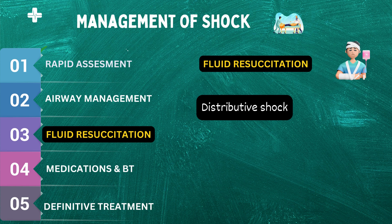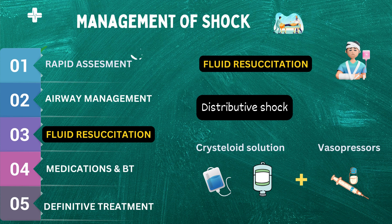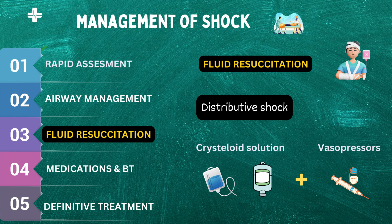For distributive shock, such as septic shock, healthcare professionals may use a combination of crystalloid solutions and vasopressor medications to improve blood pressure and tissue perfusion. Vasopressors are medications that constrict blood vessels and increase blood pressure. Fluid resuscitation must be carefully monitored to prevent fluid overload and potential complications such as pulmonary edema. Healthcare professionals will monitor the patient's vital signs, urine output, and laboratory values to ensure proper fluid balance.